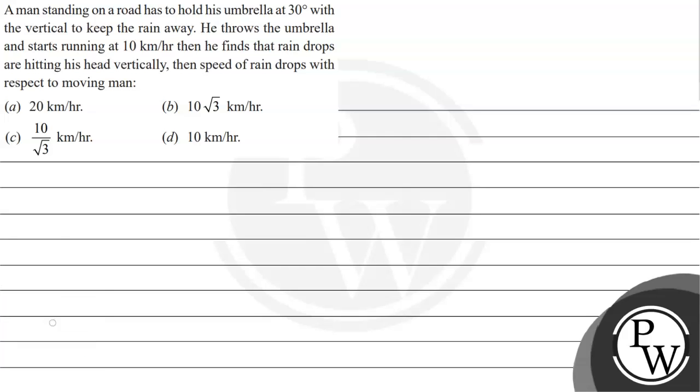Hello, let's read this question. A man standing on the road holds his umbrella at 30 degrees with the vertical to keep the rain away. He throws the umbrella and starts running at 10 kilometers per hour. Then he finds that raindrops are hitting his head vertically. Find the speed of the raindrops with respect to the moving man.